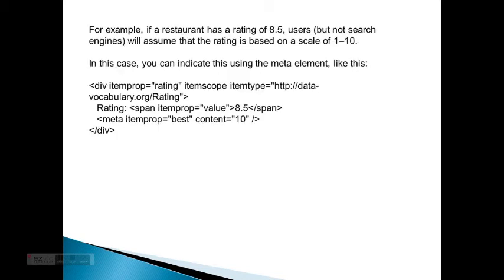For example, if a restaurant has a rating of 8.5, users — but not search engines — will assume that rating is based on a scale of 1 through 10. In this case, you can indicate this using the meta element like this: div itemprop equals rating, itemscope, itemtype equals data-vocabulary.org/Rating. Then span itemprop equals value — 8.5 — end span. And meta itemprop equals best content equals 10, which clearly shows that it's an 8.5 out of 10.